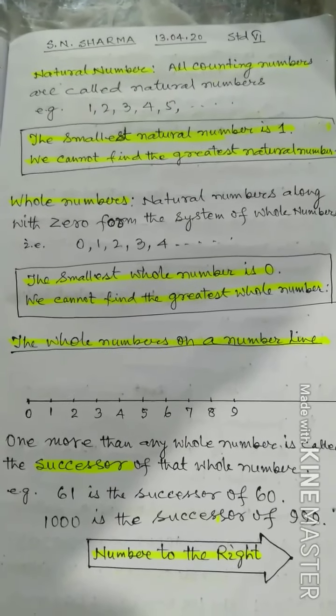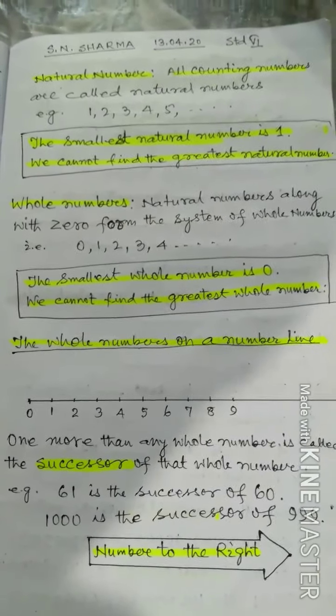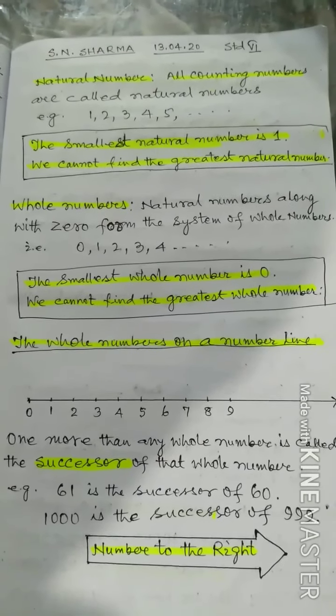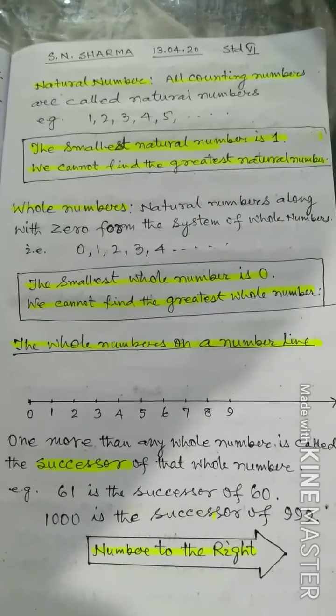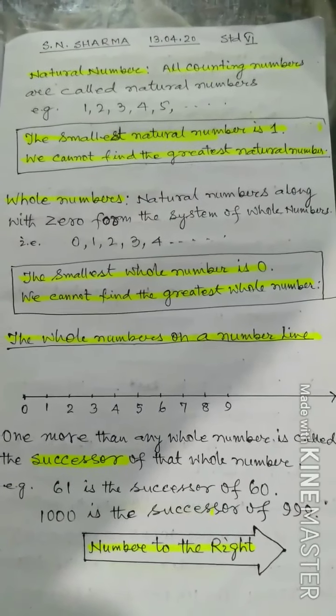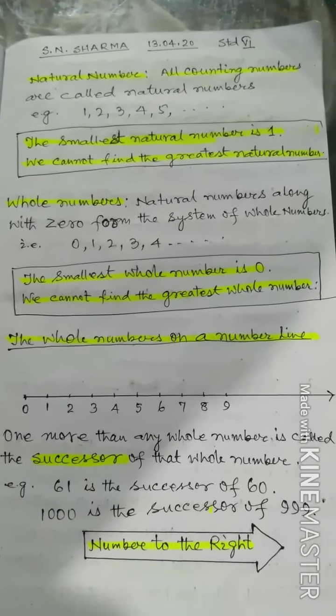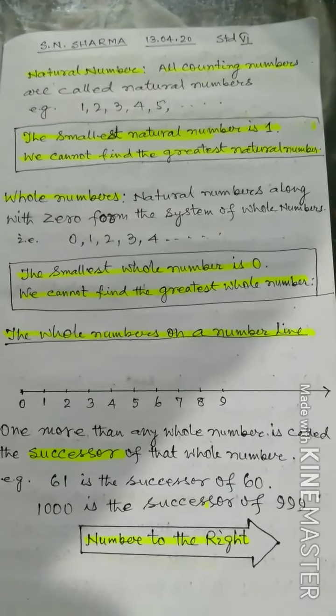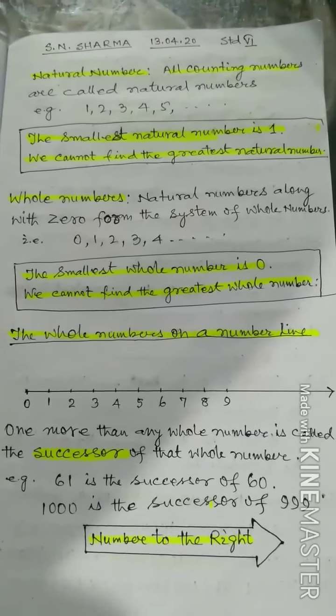We cannot find the greatest natural number because we can imagine any greatest natural number, add one, you will get the next greatest natural number. So remember, we cannot find the greatest natural number.